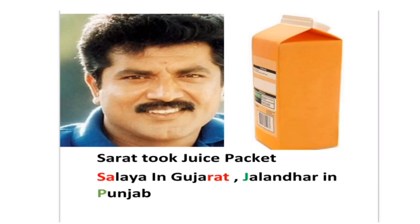The next mnemonic is 'Sarath took juice packet.' Sa stands for Salaya, which is in Gujarat — Rat means Gujarat. J stands for Jalandhar and P stands for Punjab. Sarath is also an actor in the Tamil industry, so you can relate it easily.